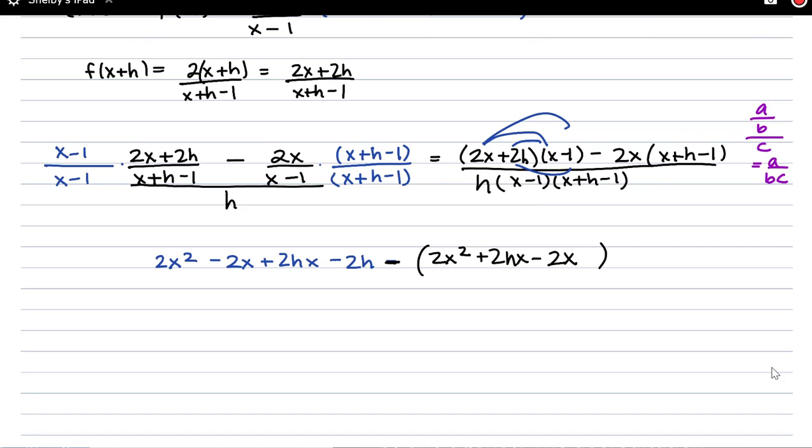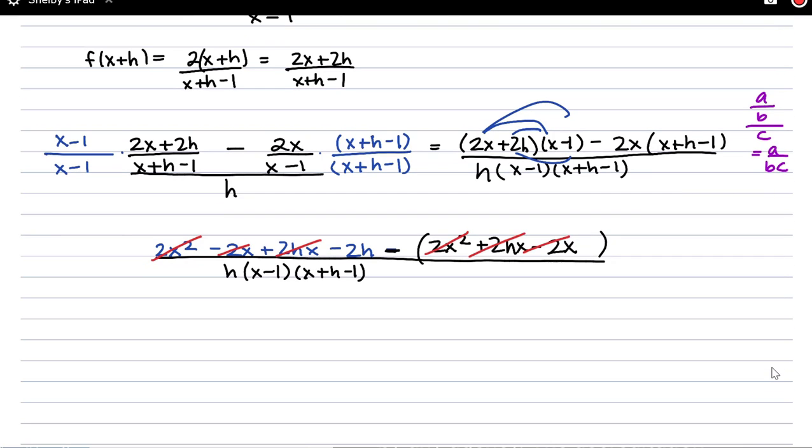So I'm looking at canceling what I can from the numerator. I have 2x squared minus 2x squared. I have negative 2x minus 2x minus a negative 2x and I have positive 2hx minus positive 2hx. So all the terms but the negative 2h cancel, leave me with h as a common factor in my numerator and denominator. So I'm going to get negative 2h over x minus 1 times x plus h minus 1. And there's our final difference quotient. That h canceled from the numerator. That is our final difference quotient.